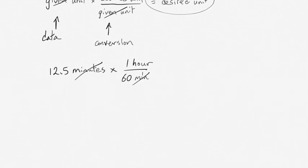What you can do is you can cancel the minutes, and you're left with hours. Doing this calculation gives you 0.2083 repeating hours.